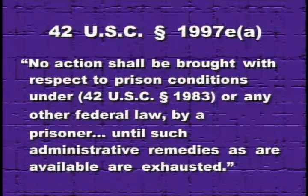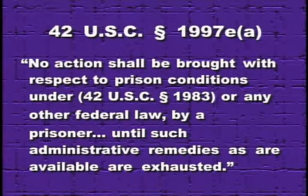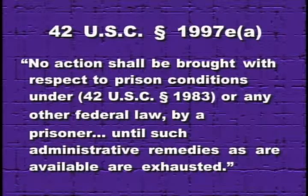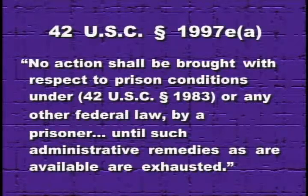To meet that first purpose, Congress erected a number of hurdles that prisoners must cross over before the court will get to the stage of processing motions to dismiss, summary judgment, et cetera. The first hurdle is an exhaustion requirement found in 42 U.S.C. section 1997E(a), which says that no action shall be brought under Section 1983 or any other federal law by a prisoner until such administrative remedies as are available have been exhausted.